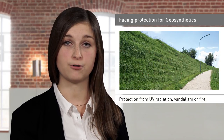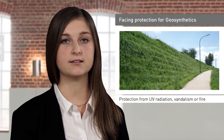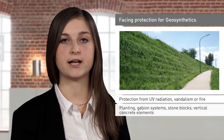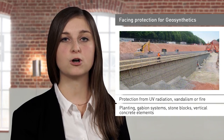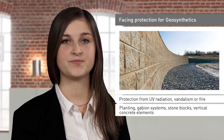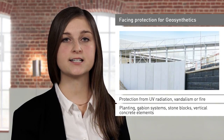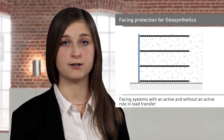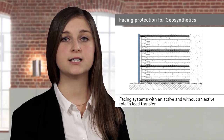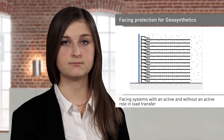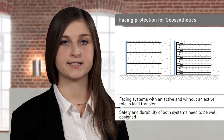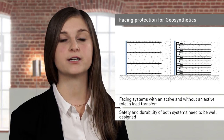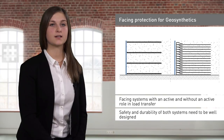To protect the geosynthetics from UV radiation, vandalism or fire in the front of slopes formed of geosynthetic reinforced soil, they are provided with a facing. Design possibilities range from planting via gabion systems to stone blocks or vertical concrete elements. There are facing systems that are actively involved in transferring the load of the overall system, thus performing a static function, but there are also facing systems that do not play an active role in load transfer. In both cases, the safety of the facing elements and the durability of the bond between the geosynthetic reinforcement and the facing elements has been well documented.